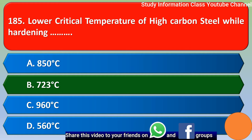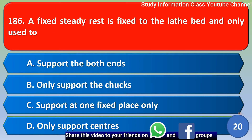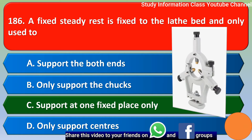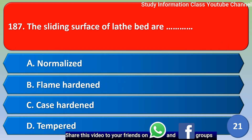Next question: a fixed steady rest is fixed to the lathe bed and is only used to — option A support both ends, option B only supports the chuck, option C support at one fixed place only. Option C is the correct answer.